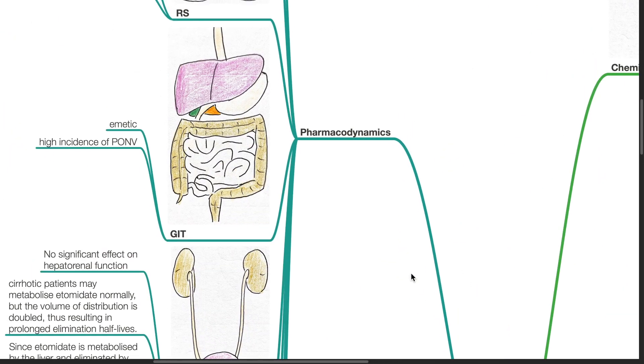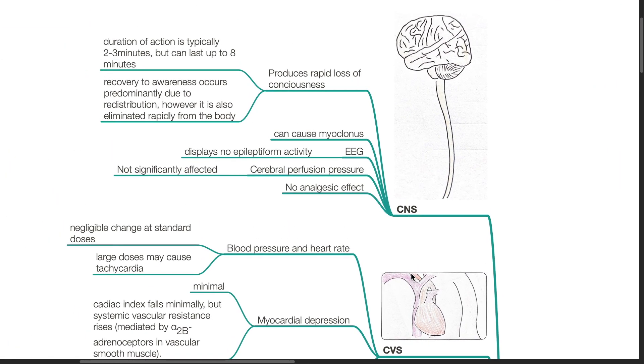Pharmacodynamics - Central Nervous System: Etomidate produces a rapid loss of consciousness. The duration of action is typically 2 to 3 minutes after single dose but can last up to 8 minutes. Recovery to awareness occurs predominantly due to redistribution. However, it is also eliminated rapidly from the body. Etomidate can cause myoclonus. EEG displays no epileptiform activity. Cerebral perfusion pressure is not significantly affected. Etomidate has no analgesic effects.